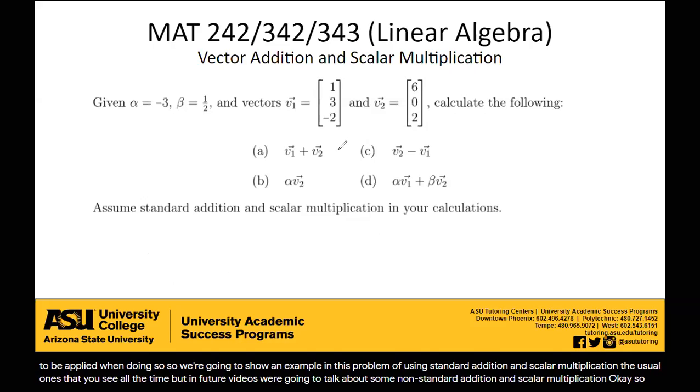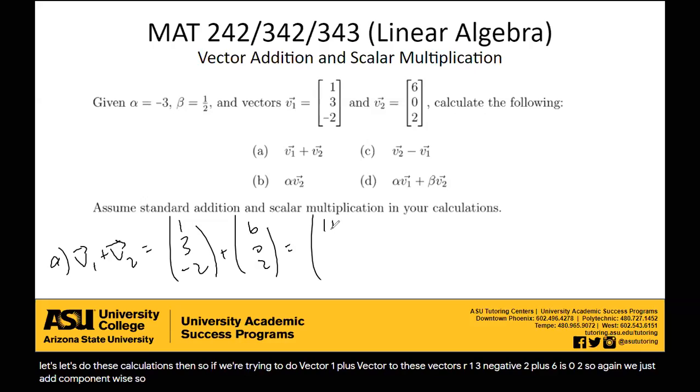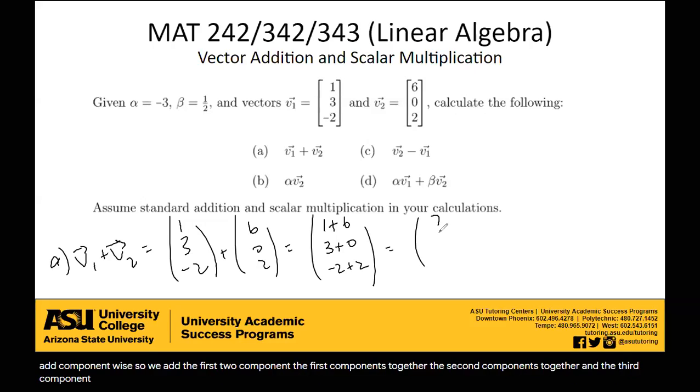Okay, so let's do these calculations then. If we're trying to do vector 1 plus vector 2, these vectors are 1, 3, negative 2, plus 6, 0, 2. So again, we just add component-wise. We add the first components together, the second components together, and the third components together, giving us the vector 7, 3, 0. So that's how you do part A.